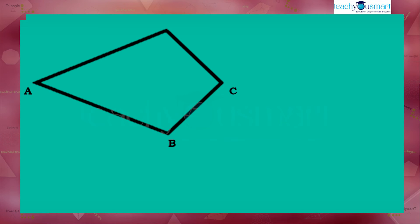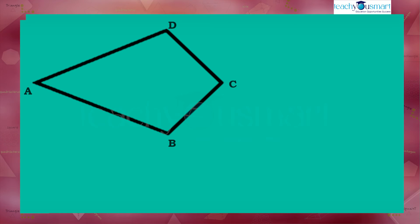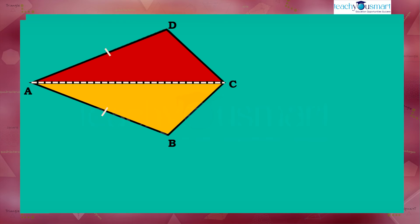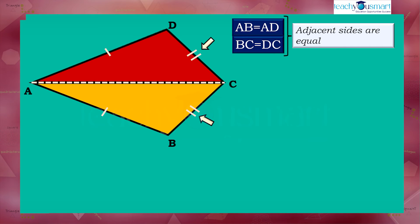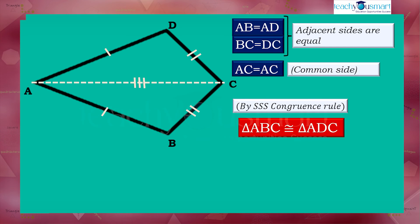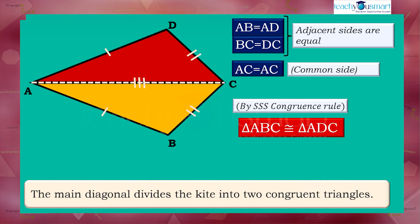In kite ABCD, AC is the longest diagonal, also called the main diagonal. It divides the kite ABCD into two triangles: triangle ABC and triangle ADC. Since ABCD is a kite, AB equals AD and BC equals DC, and AC is the common side for both triangles. Therefore by the SSS congruence rule, triangle ABC is congruent to triangle ADC. That is, the main diagonal divides the kite into two congruent triangles.